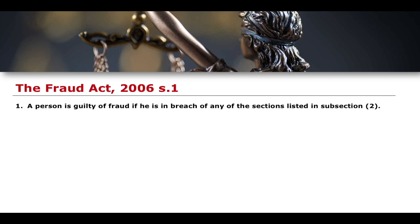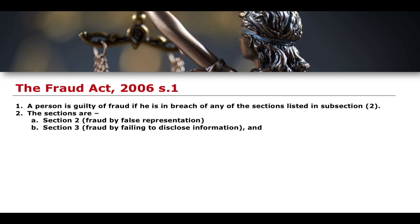Section 1 says that a person is guilty of fraud if he is in breach of any of the sections listed in subsection 2. Subsection 2 specifies: section 2 — fraud by false representation; section 3 — fraud by failing to disclose information; and section 4 — fraud by abuse of position. These are all the same offense in the sense that they're all fraud, but committed in different circumstances through different acts.